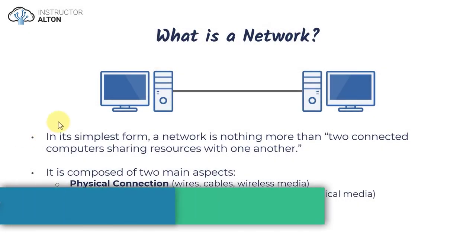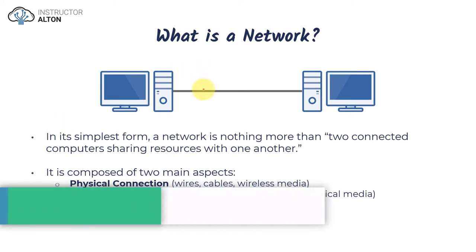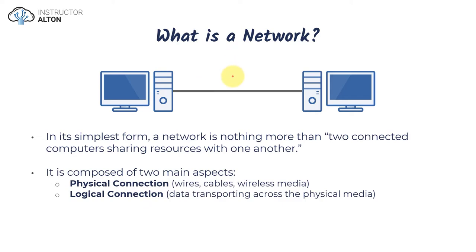In this video we're going to talk about what a computer network is in its most simplest form. In its most basic form, it's really nothing more than two computers that are connected together to allow them to share resources with one another. In this example here we have a single network cable connecting these two PCs — PC number one and PC number two — and we're not connecting them with a switch, router, hub, or wireless access point.